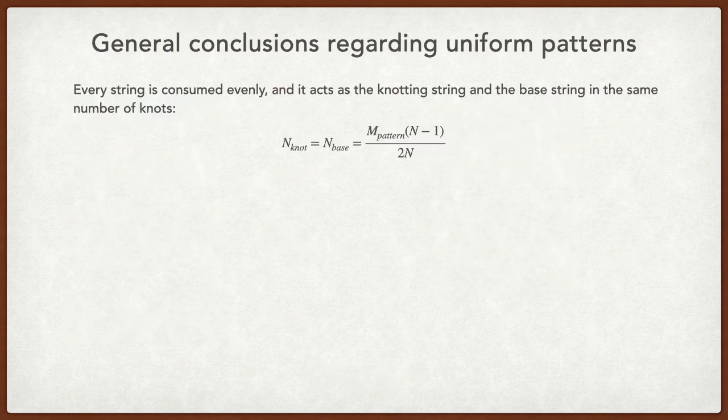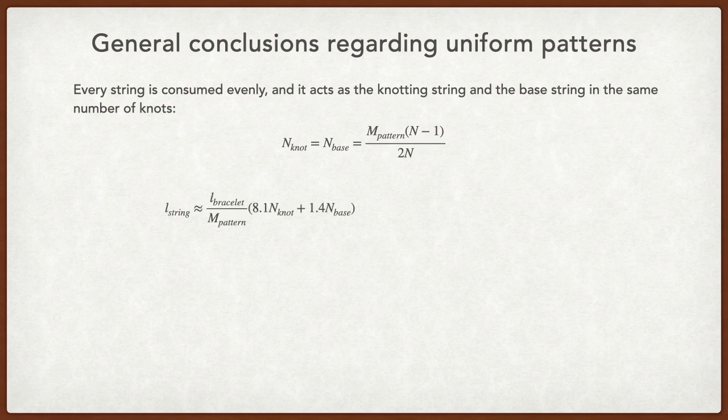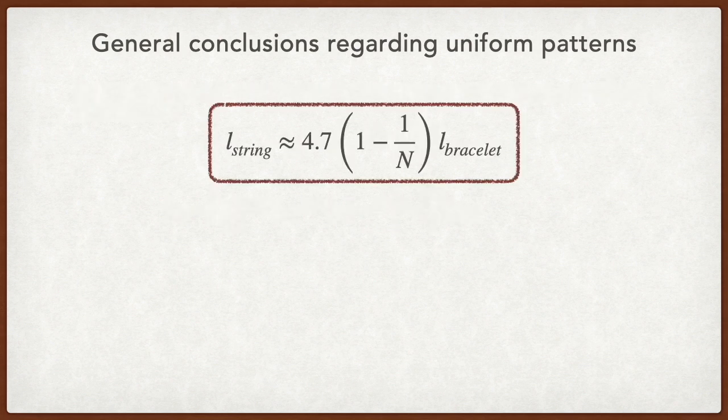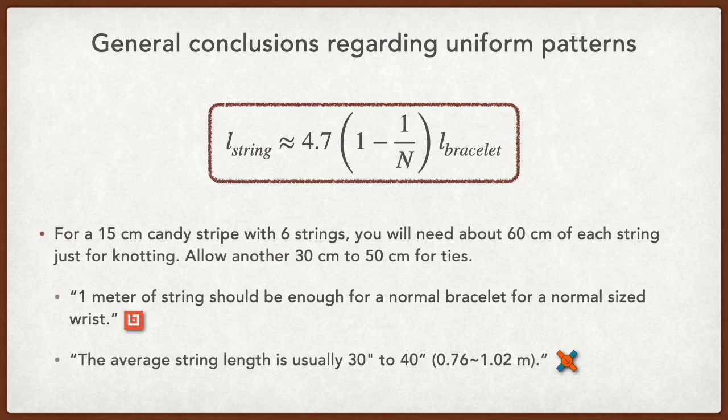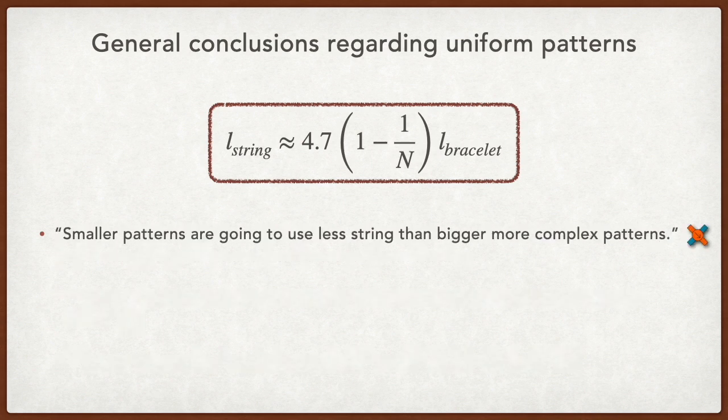Since each string is consumed evenly, a string must act as a knotting string and a base string in the same number of knots. For these patterns, we don't have to count the knots as before. We can simply plug this expression into the string length equation, and we see that the string length is only dependent on the length of the bracelet (L_bracelet) and the number of strings N. Now, let's say we want to make a 15cm long candy stripe bracelet with 6 strings. This equation tells me that I'll need 60cm of each string just for knotting, and we allow for 30 to 50cm for ties. This is in the ballpark as the advice on these two forums. We can also see that L_string increases with an increasing N. This verifies the conclusion that the bigger pattern will need longer strings.